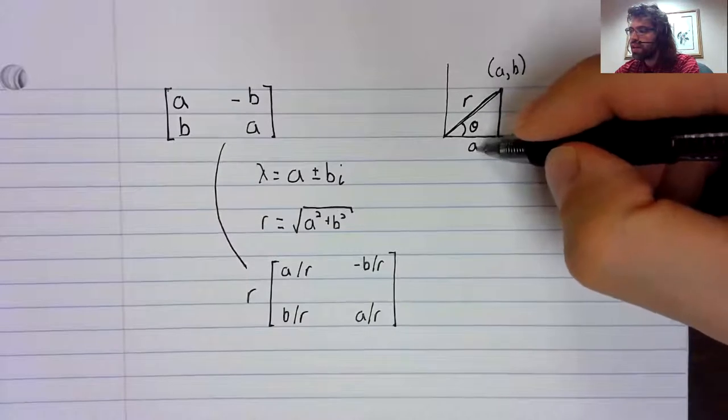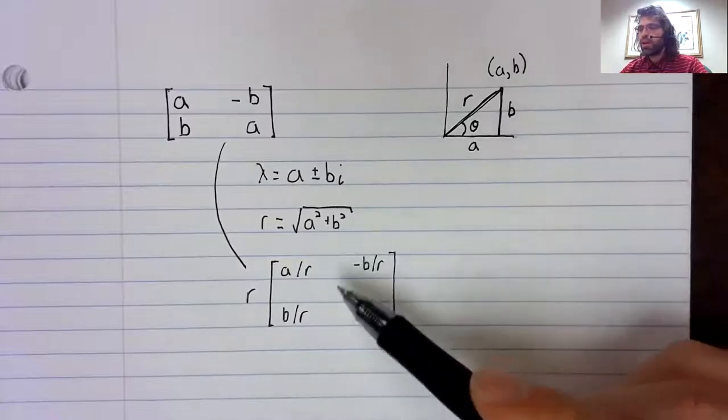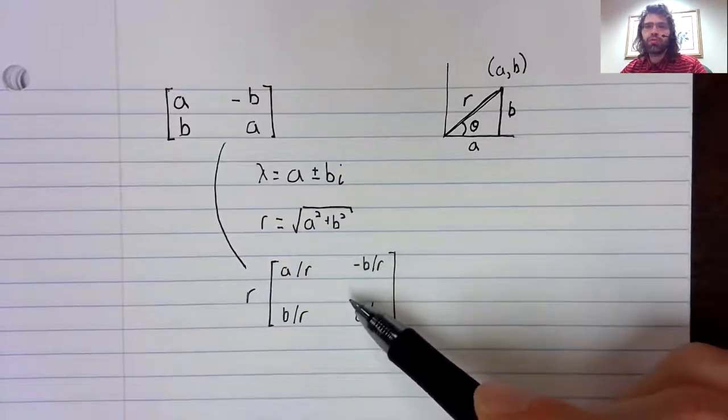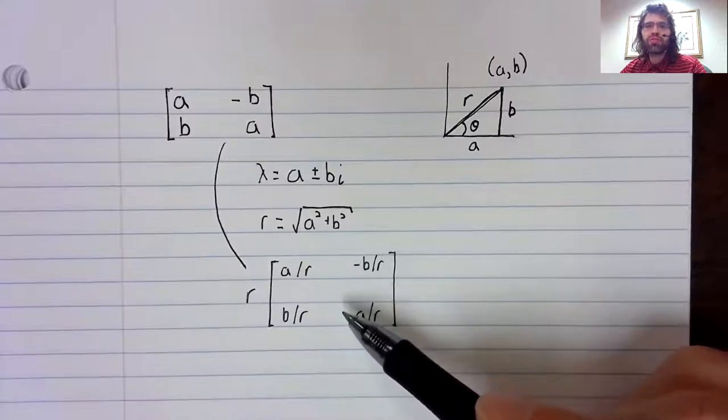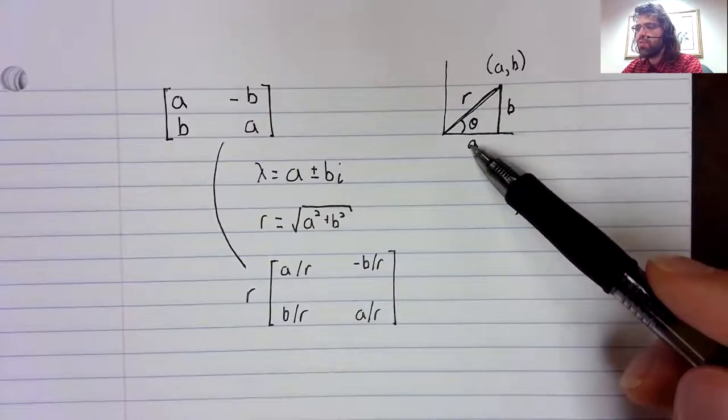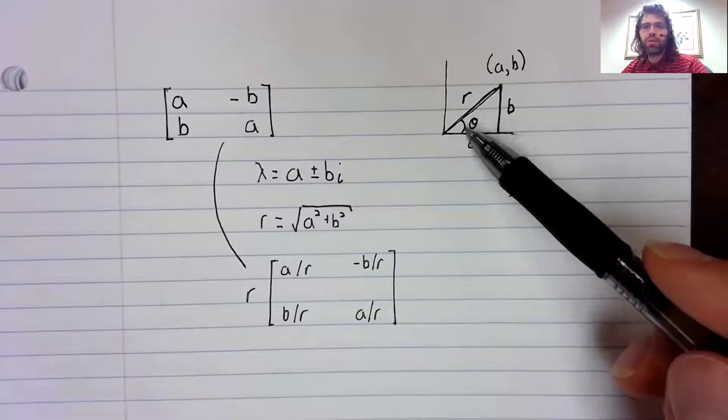And now there's R, here's A, here's B. All of these quotients are trigonometric expressions like A over R is the cosine of this angle.